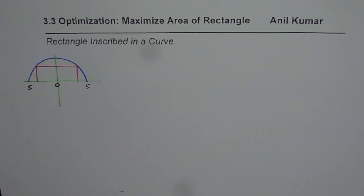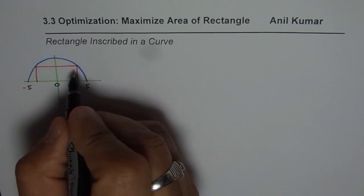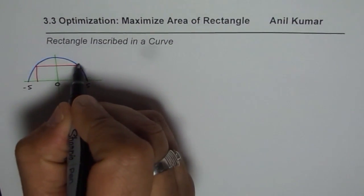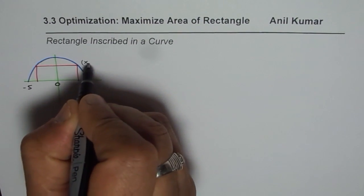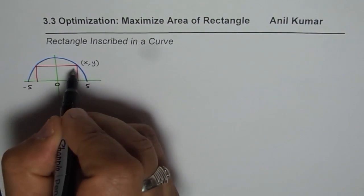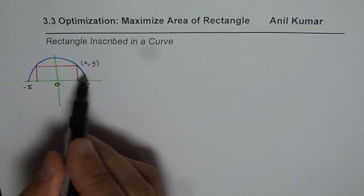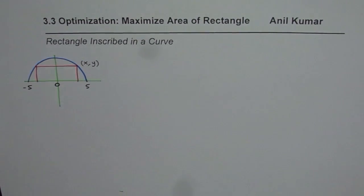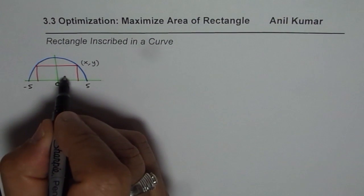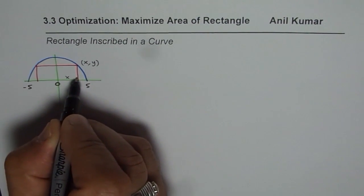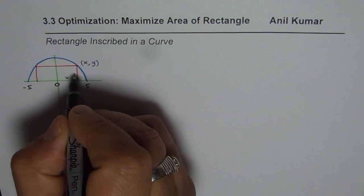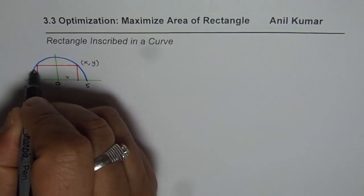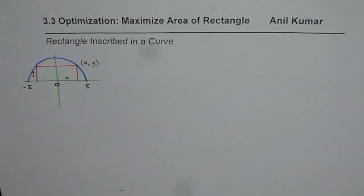You can pause the video, answer the question, and then look at my suggestion. Now how to do such questions? The idea here is to take a point on the vertex of the rectangle, let it be (x, y), and this point will also be on the semicircle. So this point tells us that the x value is actually half of the width of the rectangle and the y value is the height of the rectangle.